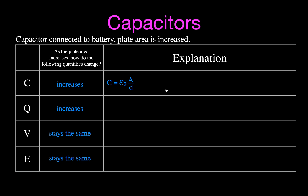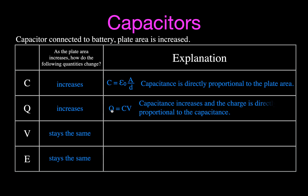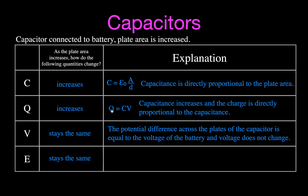Why did the capacitance increase? Because we increased the area - capacitance is directly proportional to the area. The charge increased because bigger plates give more capacitance, and capacitance and charge are directly related. The voltage is just the voltage of the battery - we didn't change that. The electric field strength remains the same because when the capacitor is connected to the battery, the electric field strength is not dependent upon the area - we're keeping the charge density the same.